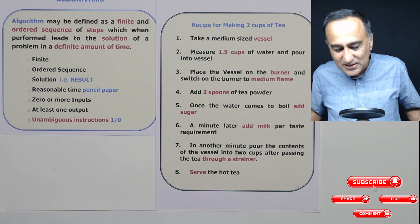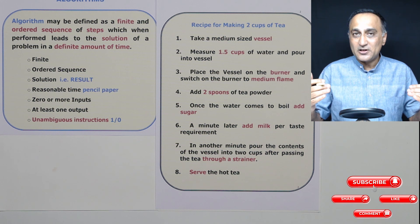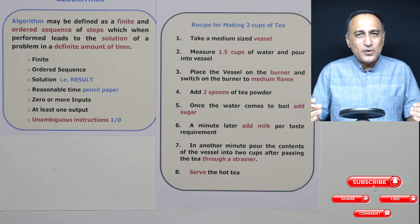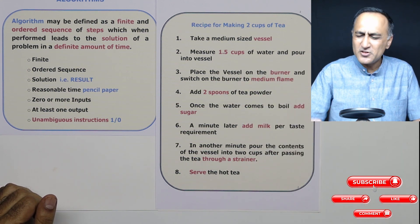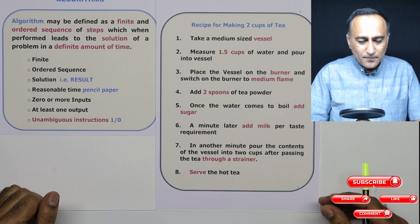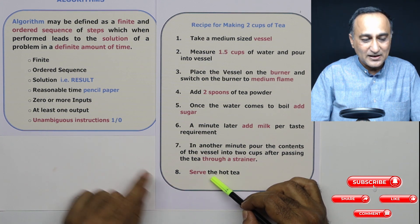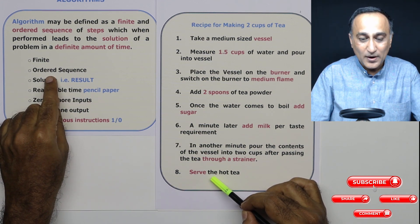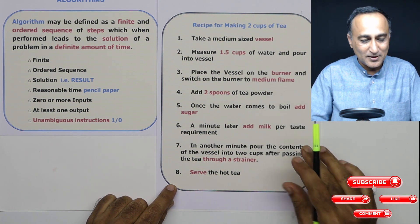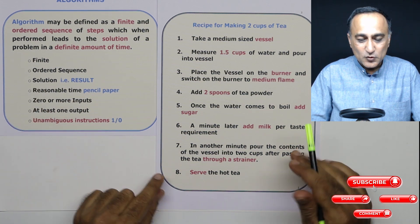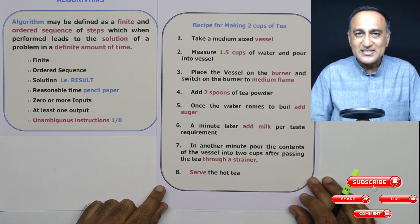Step eight: serve the hot tea. Now, I showed you one particular method of making tea — there could be slight variations, but this is broadly the approach. Some may add sugar first and then tea powder, which is fine. If you look at it: there are finite steps — eight steps to make tea. There is a sequence — can you take step eight and make it step one? Can you directly say 'serve hot tea'? Not possible. And it leads to a solution: two cups of tea.